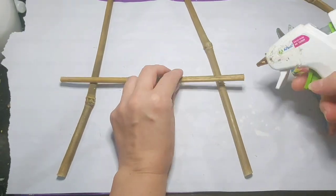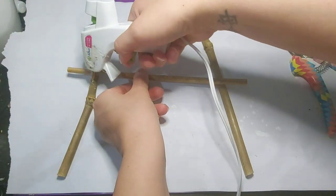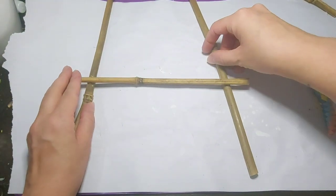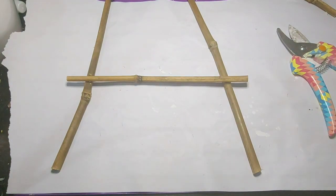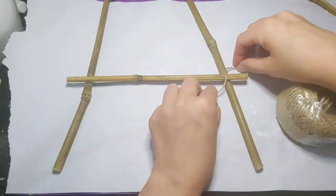I glued them in place, then I took jute twine from the Dollar Tree and wrapped them in an X shape to secure them in place so that it would be a long-term hold and make it more secure.